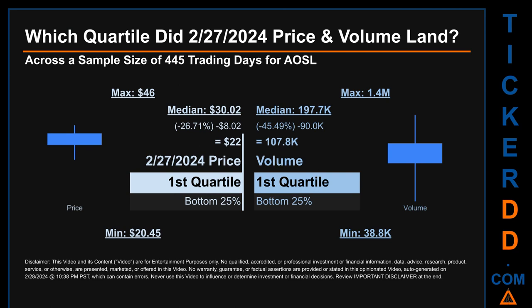Hello, my name is Maria. Which quartile did February 27, 2024 price and volume land in, across a sample size of 445 trading days? The maximum end-of-day price for AOSL was $46.00, while the minimum was $20.45. Within that price range, February 27, 2024's price of $22.00 landed within the first quartile, meaning it was within the bottom 25% of all sampled end-of-day prices. The day's volume also landed within the first quartile — the bottom 25% of all sampled daily volume — which saw a max daily volume of 1.4 million and a minimum of 38.8 thousand.